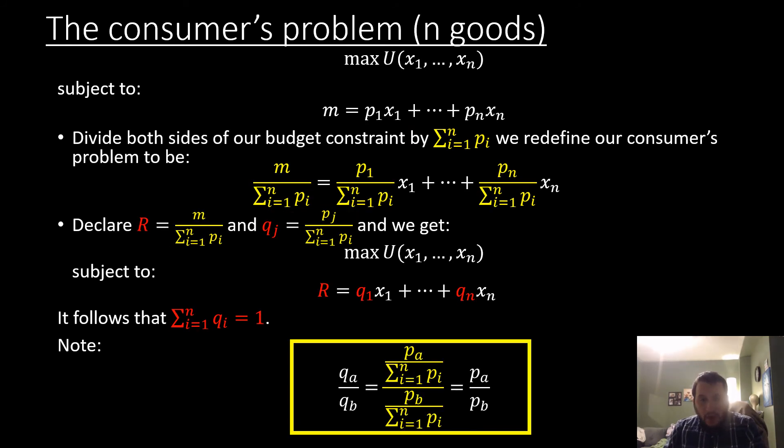Now we're going to note something really important. We can recover our original price ratio from our transformed price ratio, and that's seen from this algebra here. If we look at this fraction that we have, bringing the denominator up to the top and flipping it, we get our original price ratio.